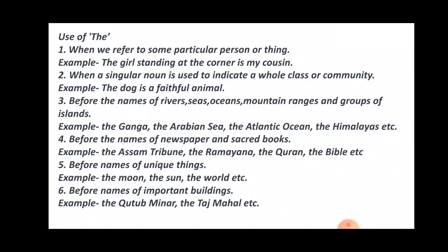Fifth, before names of unique things. Before the names of unique things we write the. Like the moon. Moon is a unique thing. Sun, the sun, the world, etc. Sixth, before names of important buildings and monuments. We use the. Like the Qutub Minar, the Taj Mahal, etc.